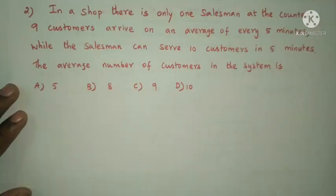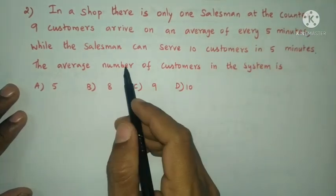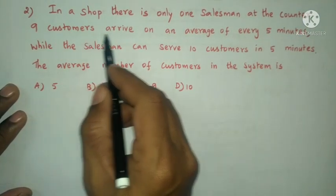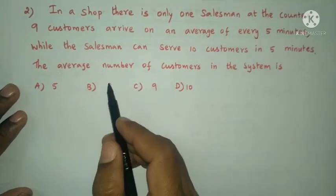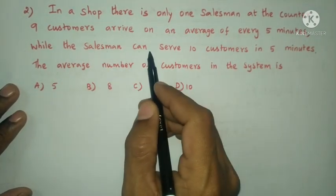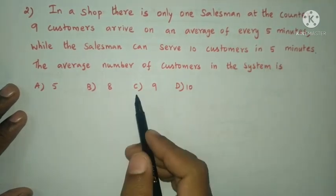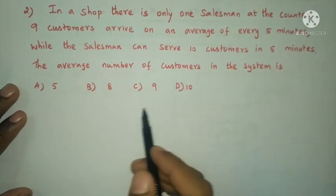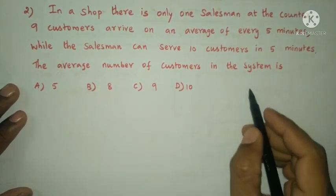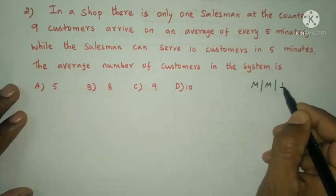Next question: In a shop there is only one salesman at the counter. 9 customers arrive on an average of every 5 minutes, while the salesman can serve 10 customers in 5 minutes. The average number of customers in the system is to be found using the M/M/1 queuing model.